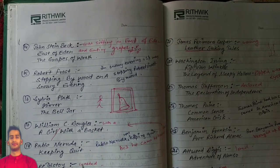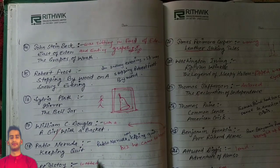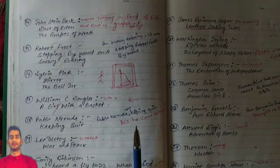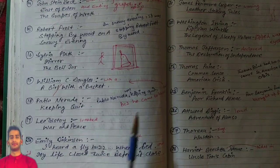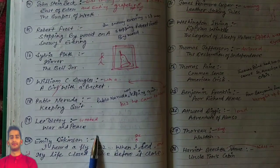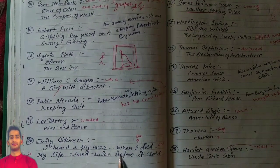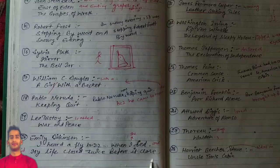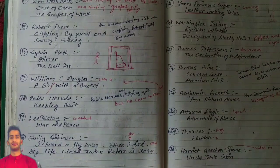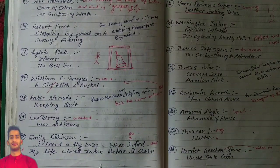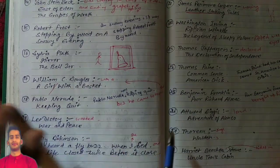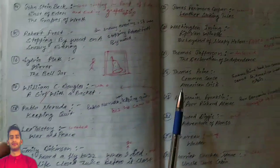Leo Tolstoy: War and Peace. Emily Dickinson's important poems: I Heard a Fly Buzz When I Died and My Life Closed Twice Before Its Close.